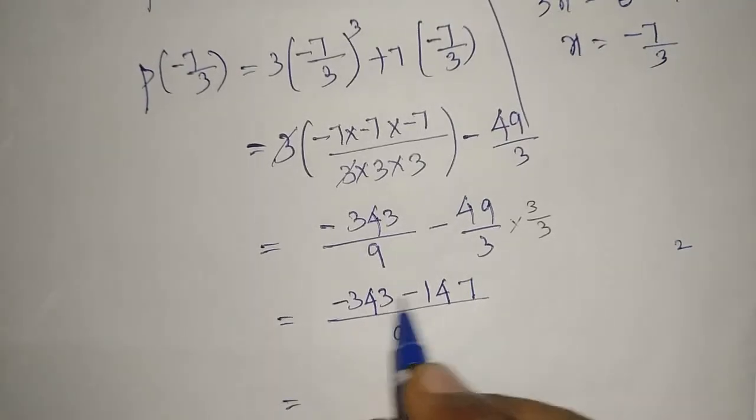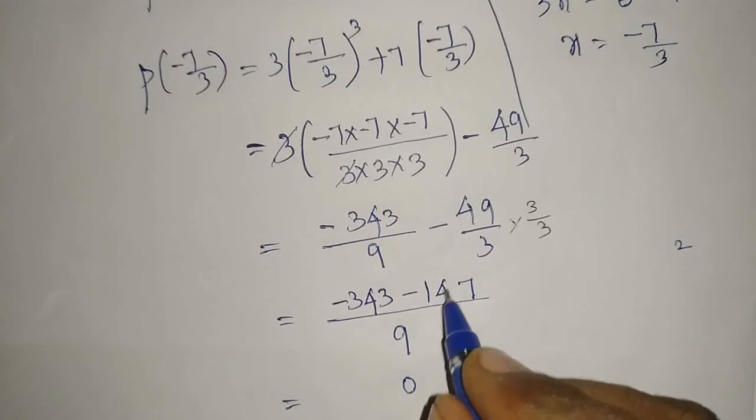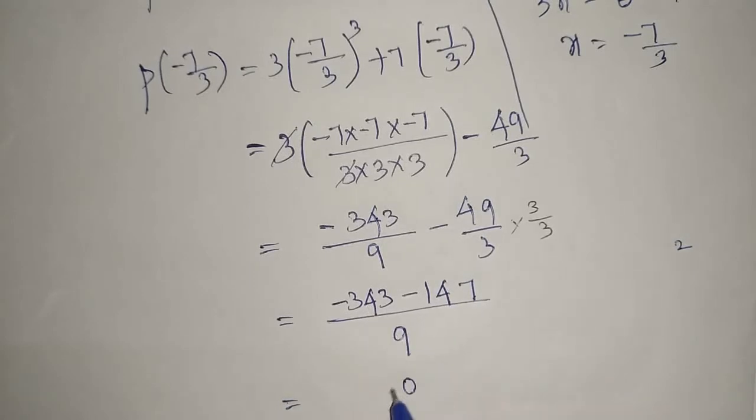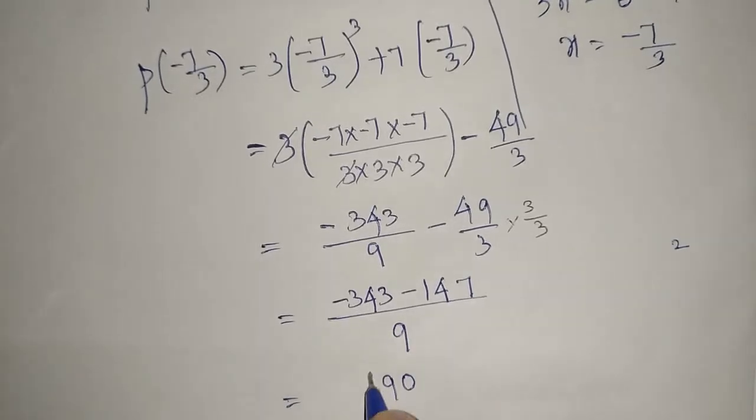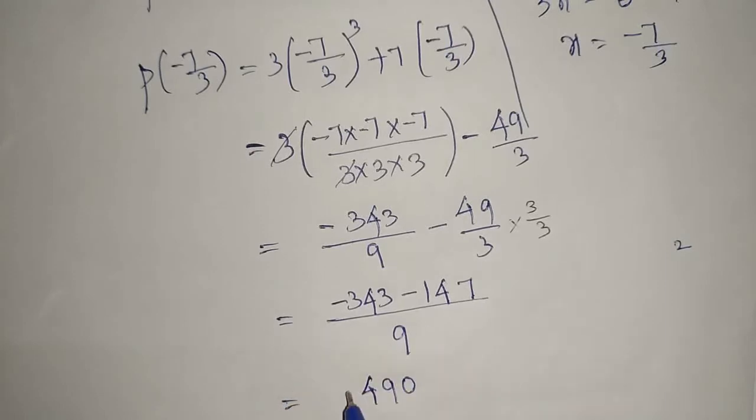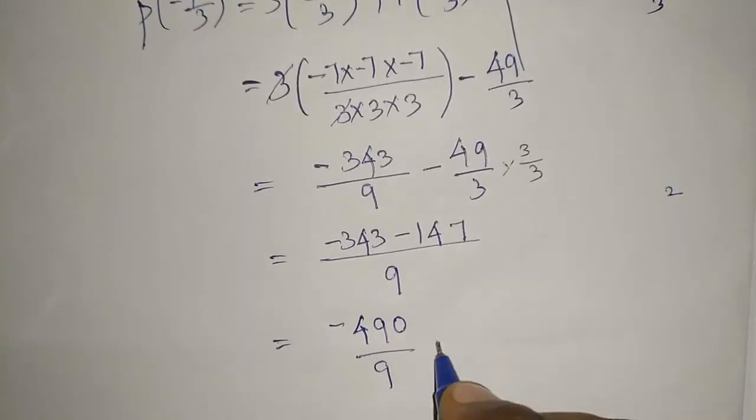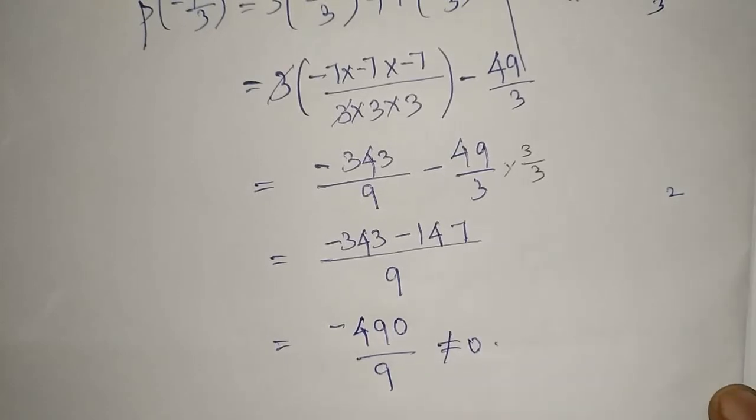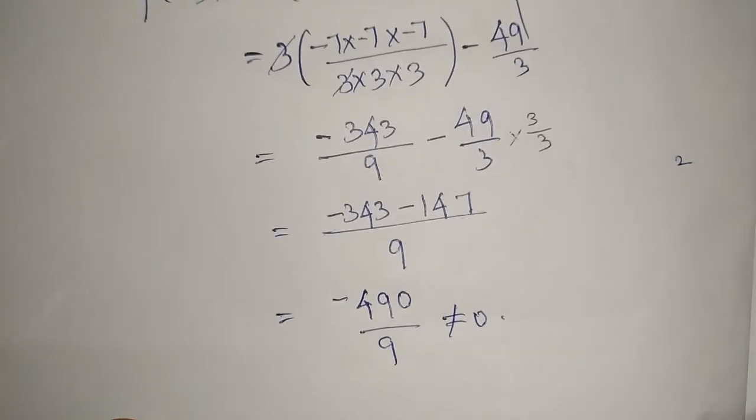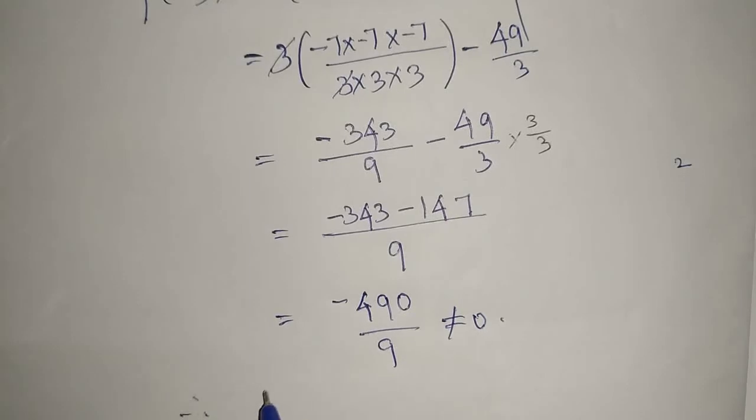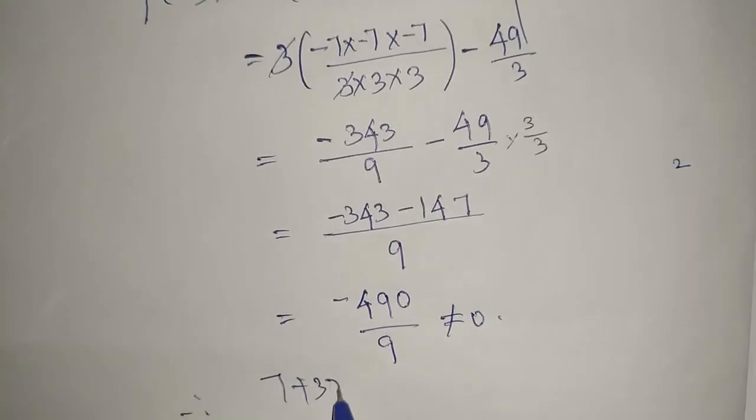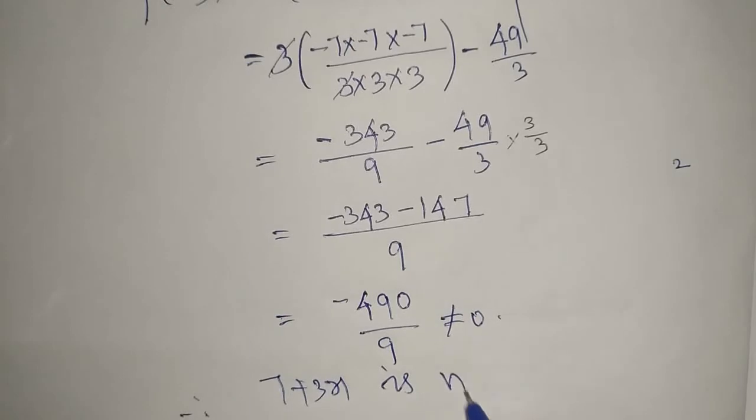So 7 remaining, 2 and 4 is 12, 12 plus 2 now 47 whole divided by 9. Now if we add this together, what we are getting? 0 and 1, 8, 9. This together if we add, both are negative, so negative 490 whole divided by 9. And this is definitely not equal to 0. Therefore, 7 plus 3x is not a factor of 3x³ plus 7x.